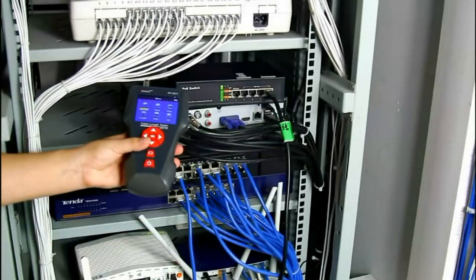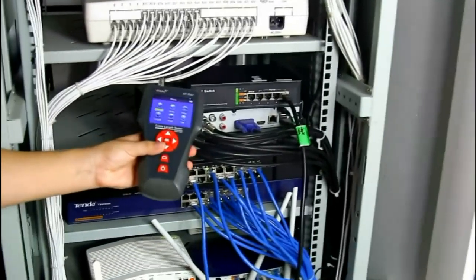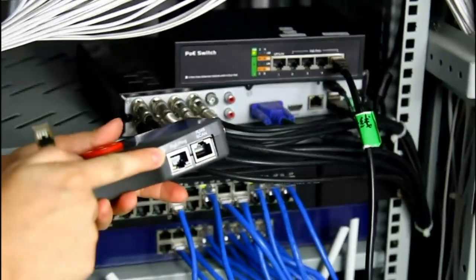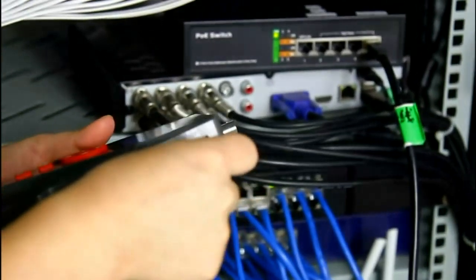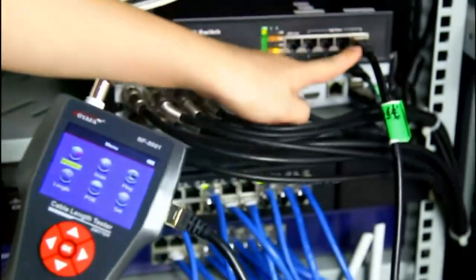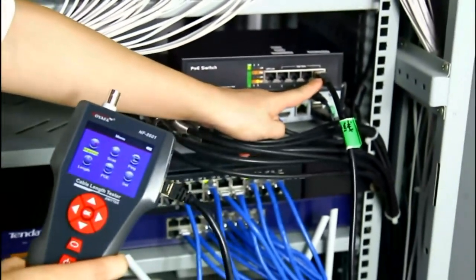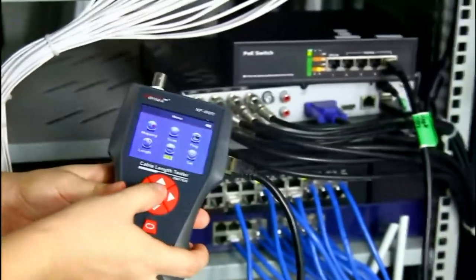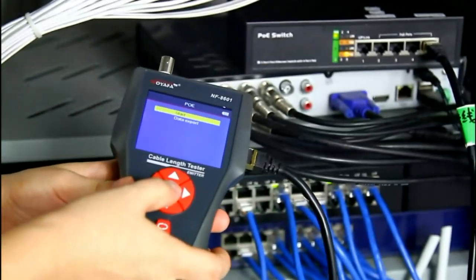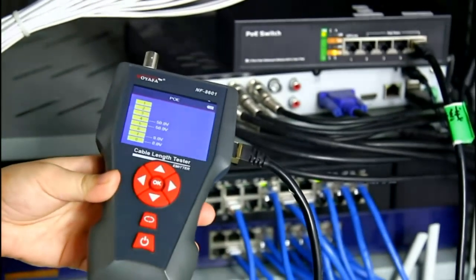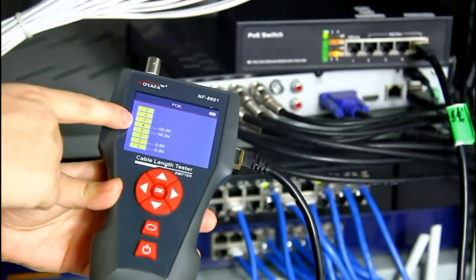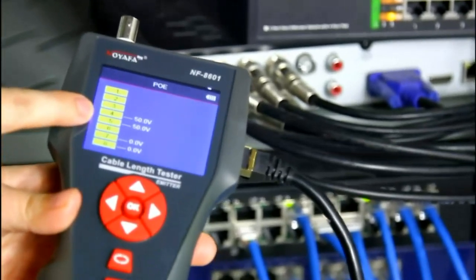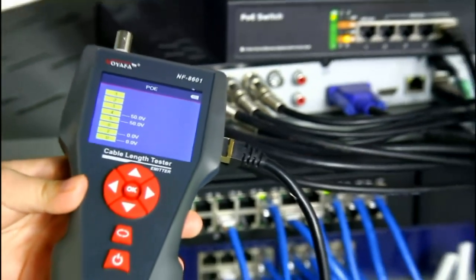Then let's come to PoE port. Connect one end of the cable into the PoE and ping port. And another end is connected to the PoE switch. Here we choose PoE from the menu. The result shows pin 4 and pin 5 provides 50 voltage. So this is the voltage of this network cable.